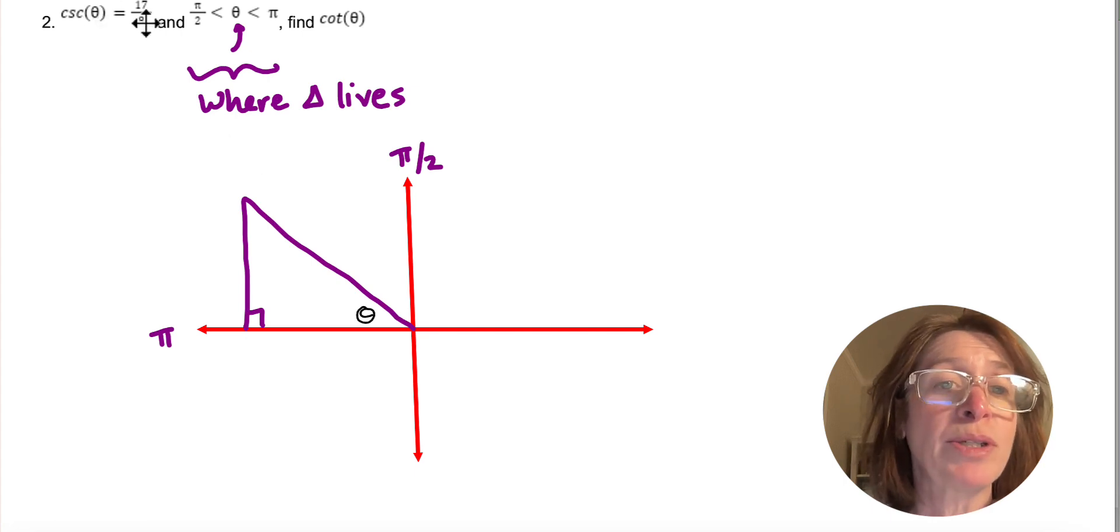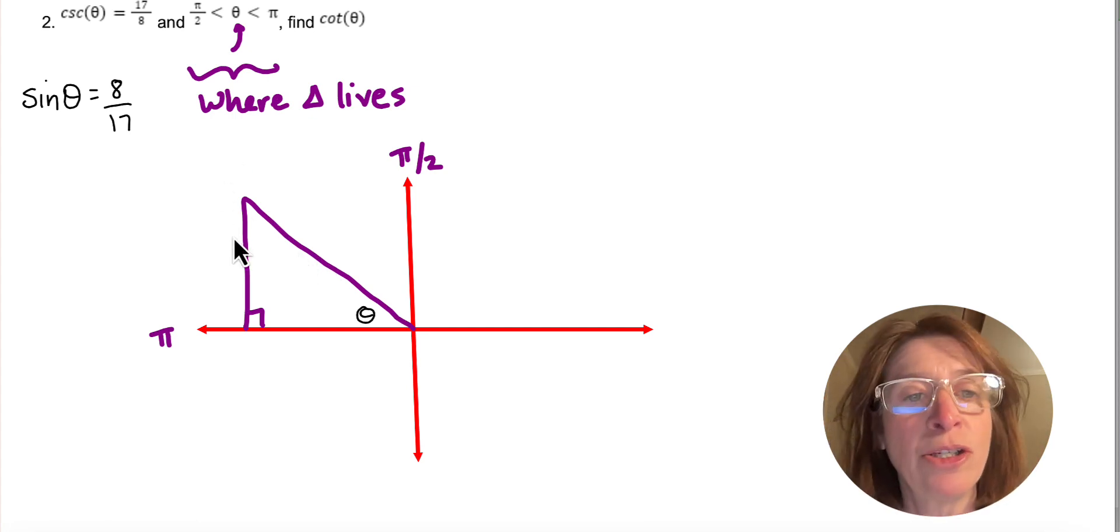So cosecant we know is the reciprocal to sine, so sine theta then is 8 over 17. That helps me label the sides of my triangle. Sine is opposite over hypotenuse, so opposite, hypotenuse.